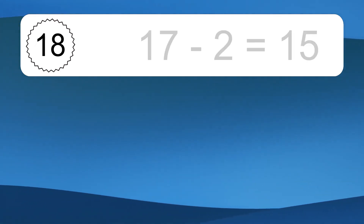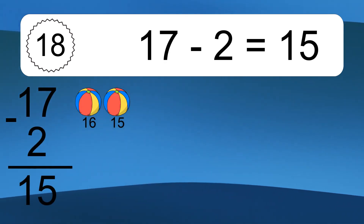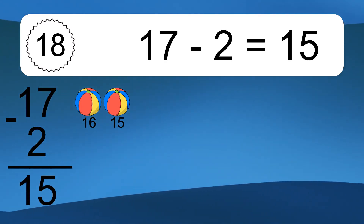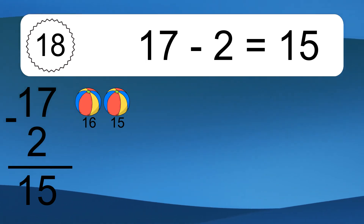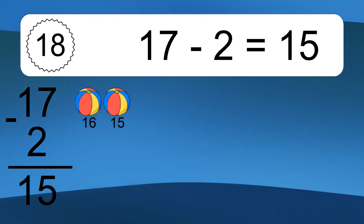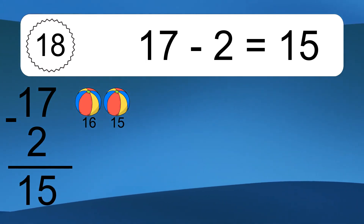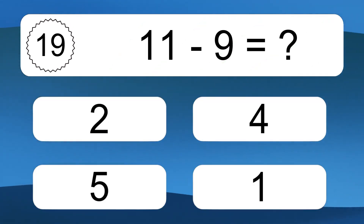17 minus 2 equals what? 17 minus 2 equals 15. Let's count it: 16, 15. 11 minus 9 equals what?